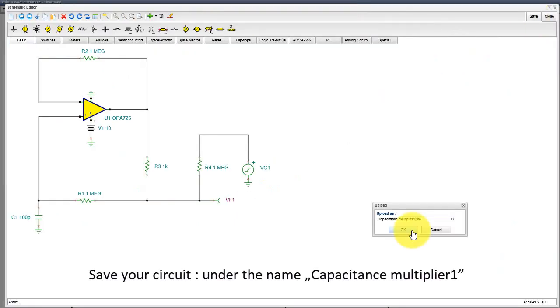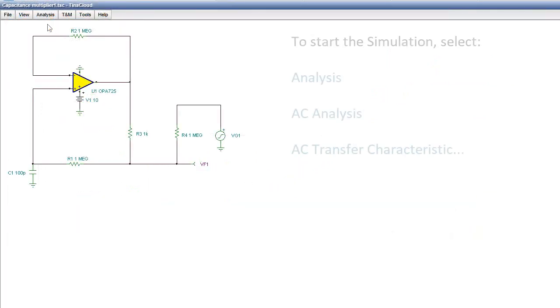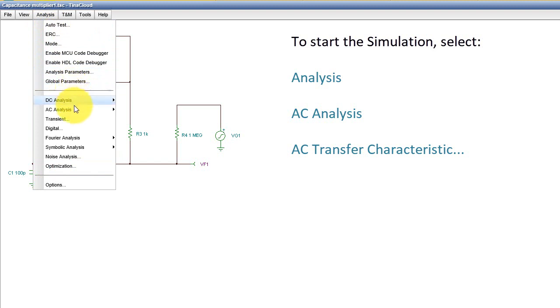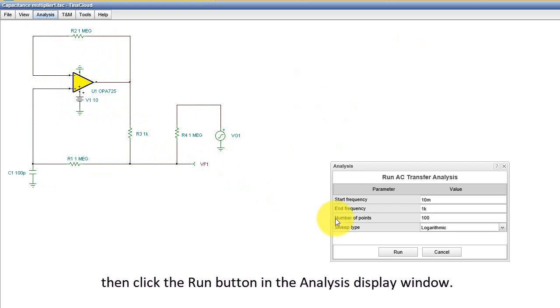Save your circuit under the name Capacitance Multiplier 1. To start the simulation, select Analysis, AC Analysis, AC Transfer Characteristic, then click the Run button in the Analysis Display window.